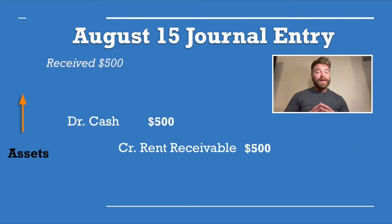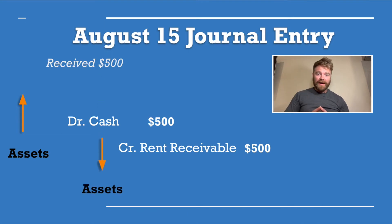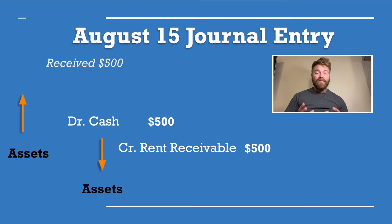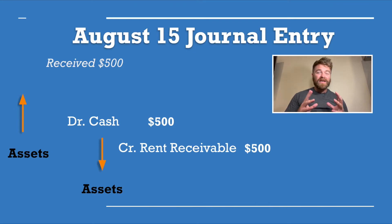This shows that assets are decreasing by $500. We need to show that the renter paid half of what they owed, so the rent receivable balance goes down by $500 because they no longer owe that amount. Our renter still owes us the remaining $500.